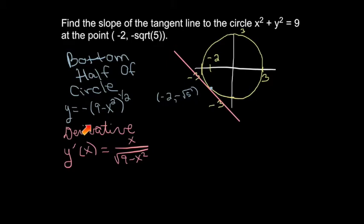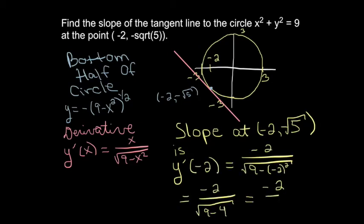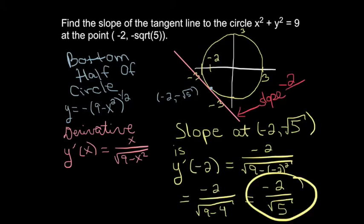Here's the equation for the bottom half of the circle and its derivative. Now let's find the slope at the desired point by plugging in negative 2 into our derivative formula. We get negative 2 over the square root of 5, so the slope is negative 2 over square root of 5.